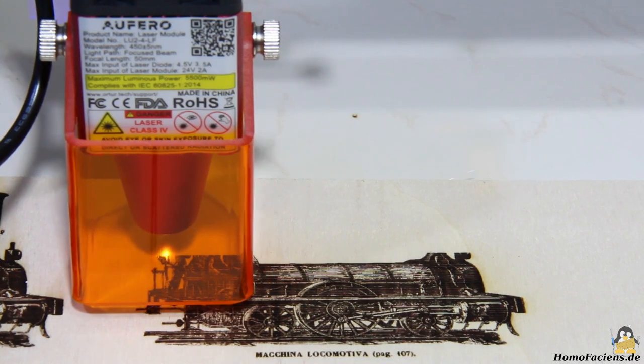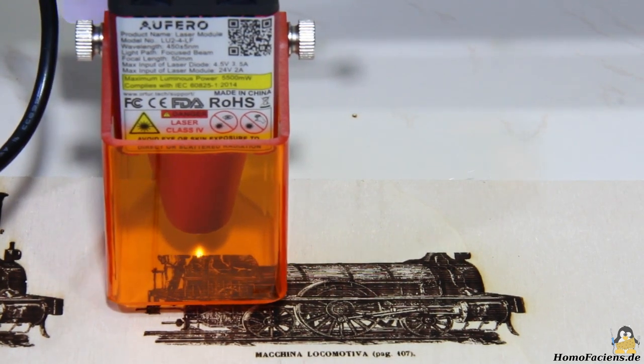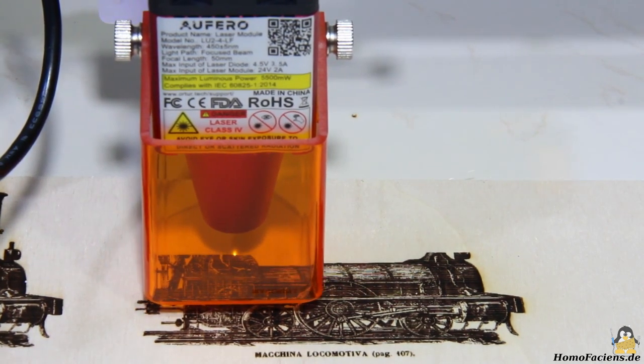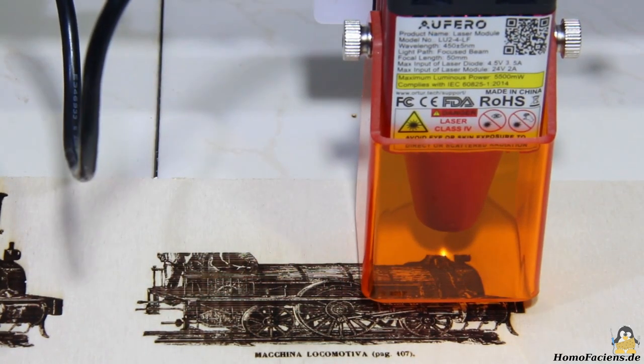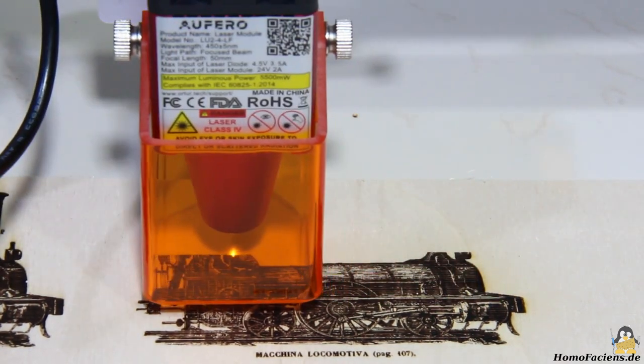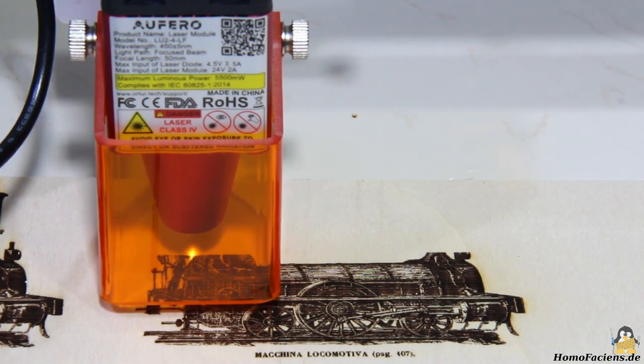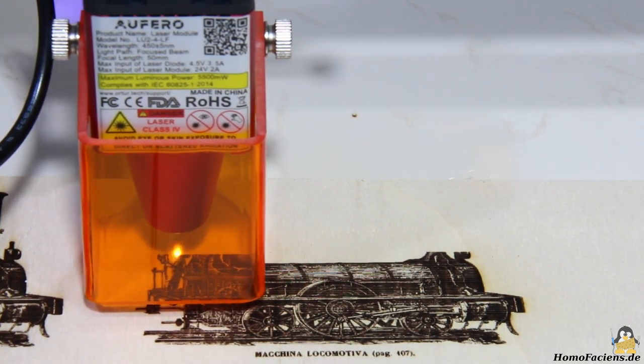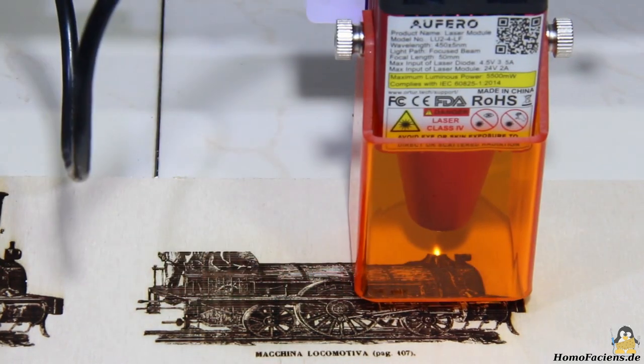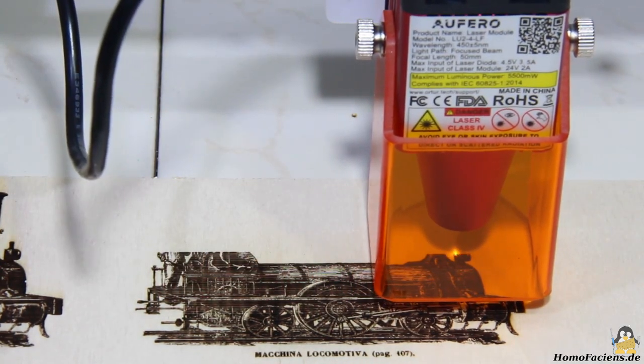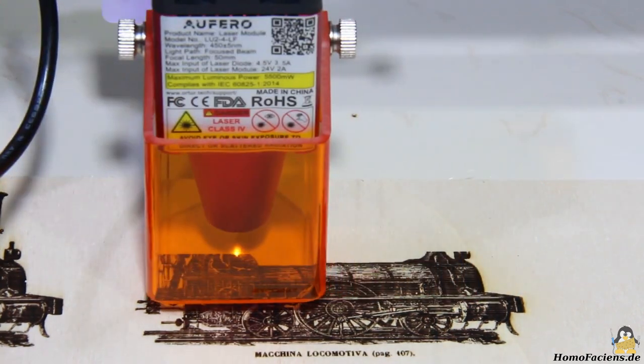The same file is engraved with the LU2-4LF laser module next. Only 20% of the maximum power is used here, which corresponds to 1.1W and therefore less than the power with the previously used laser module. The reason is that the cross section of the laser beam is a bit smaller at the focal point and thus the power is concentrated on a smaller area.